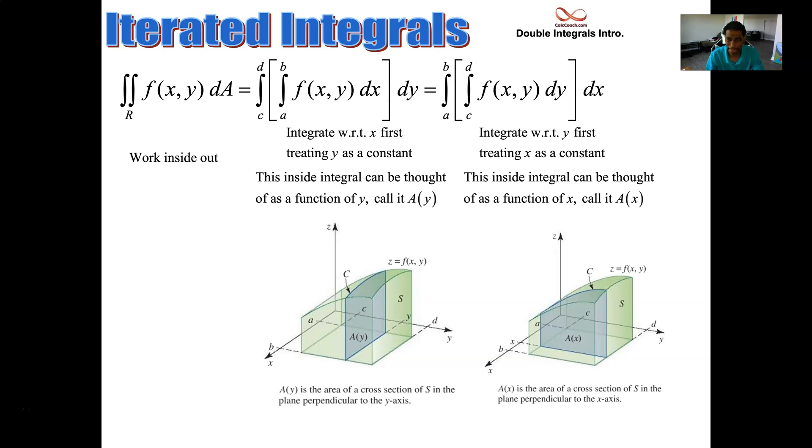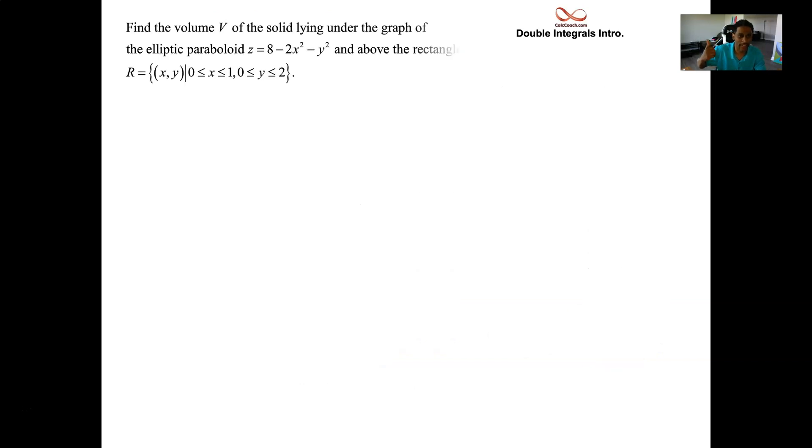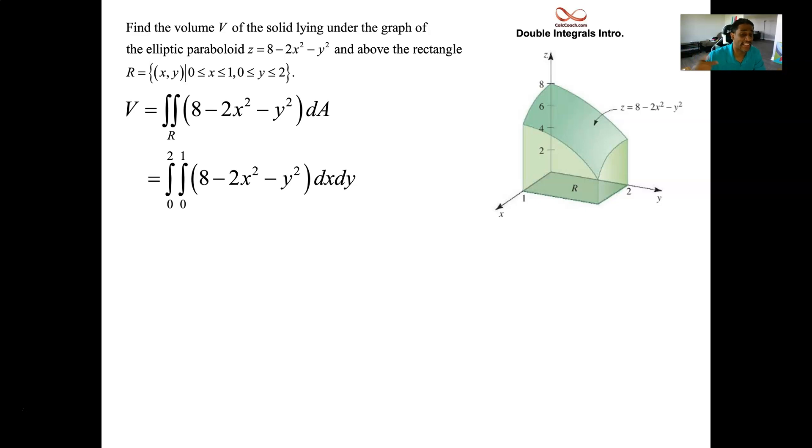So now we know how to find the double integral value when it's over a rectangular region exactly. Let's go back to the original example that we had where we did the approximation. We got like eight and a half. And we're going to see how bad an approximation that was. And so we're going to do this double integral.